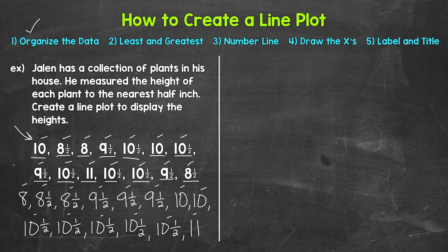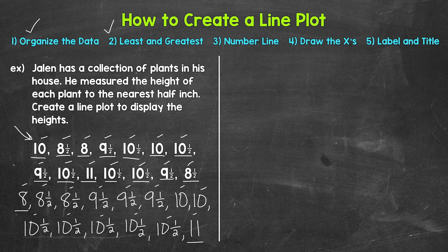Next, we need to find the least and greatest number we're working with so we can make a number line that fits all of our data. Since our data is in order, this is a quick step — our least is eight inches and our greatest is eleven inches. We need to make a number line going from eight to eleven, counting up by one half since we have halves involved.